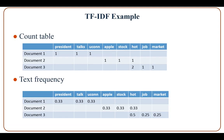The term frequency of the word 'president', as well as many other words, is 0.33, because there are two out of three words in Document 1. The term frequency of 'hot' in Document 3 is 0.5, because there are two occurrences of 'hot' and